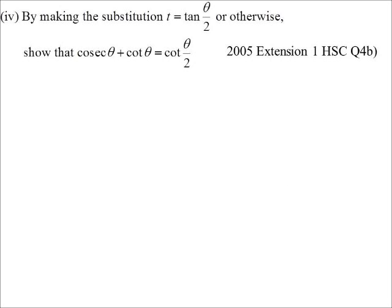Here's one from an HSC. By making a substitution, so they've told us we're going to use the T results. And so we're going to show cosec plus cot is, in fact, cot of theta on two. Alright. Cosec is reciprocal of sine. So I want the sine result upside down for cosec. Cot is the reciprocal of tan. So I want the tan T result upside down for the second one. So cosec plus cot.